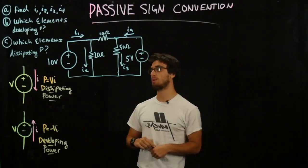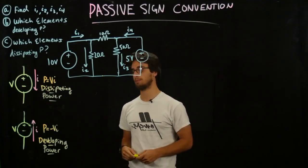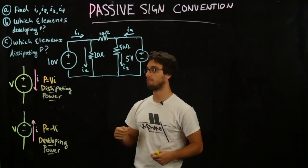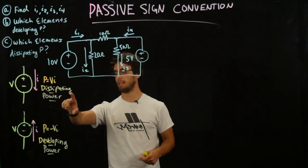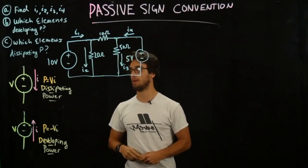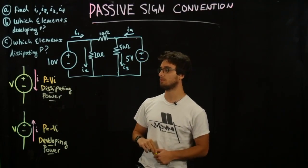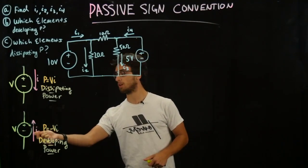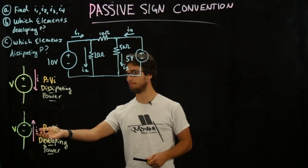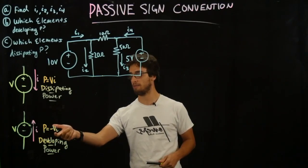When we want to calculate the power going through a voltage source and we know the current flowing through it, we define dissipating power as the current flowing into the positive and out the negative, and we calculate that through P equals VI. When the current is flowing into the negative and out the positive of a voltage source, we call this developing power, and we calculate that as P equals negative VI.